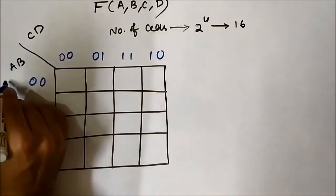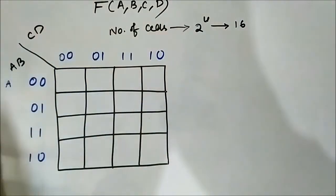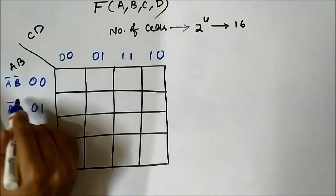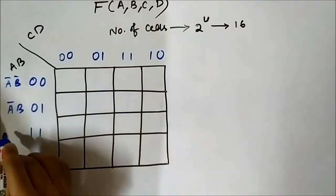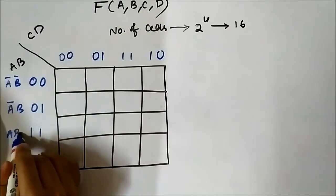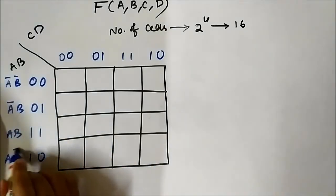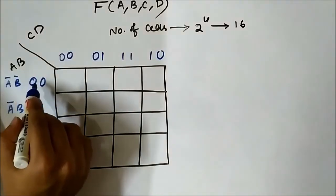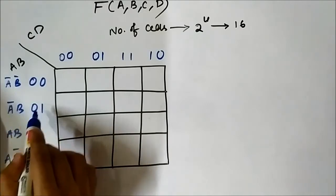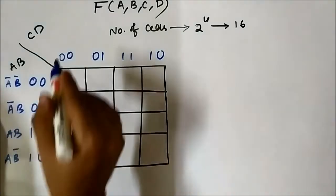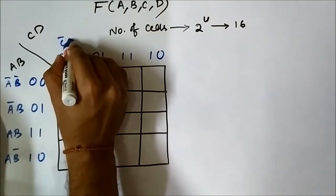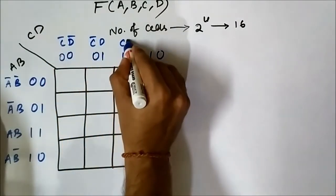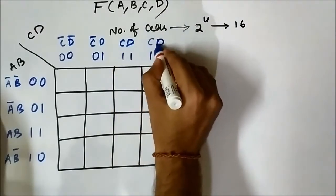So the labels on the axes are: A bar B bar, A bar B, AB, and AB bar on one side. The same principle applies — complemented variables stand for 0, uncomplemented variables stand for 1. On the other side it is: C bar D bar, C bar D, CD, and CD bar.